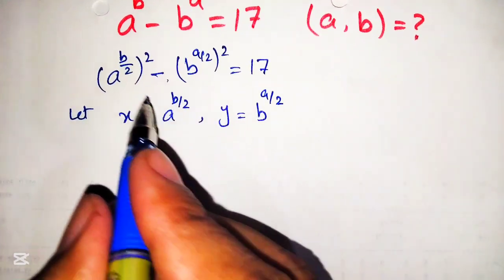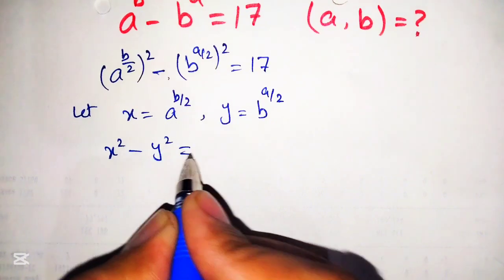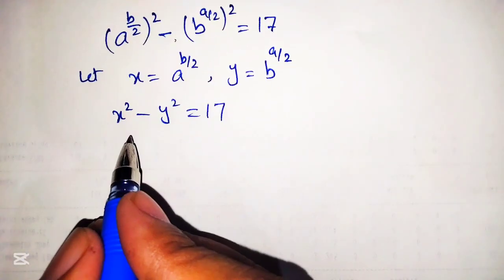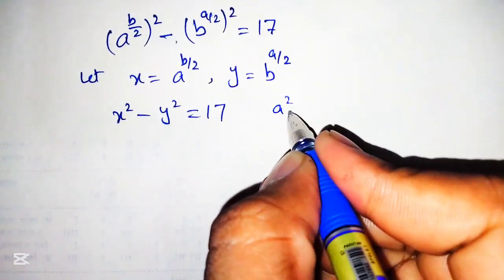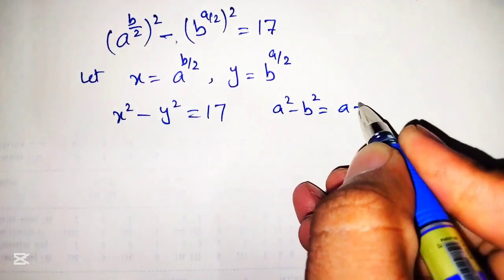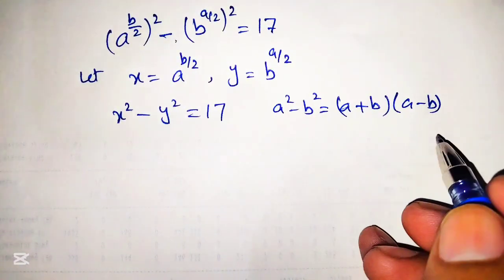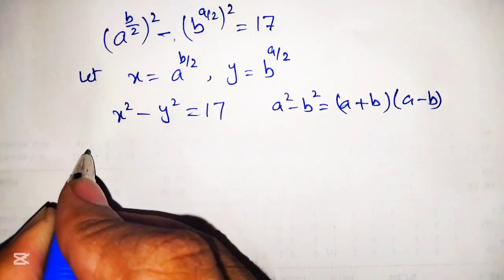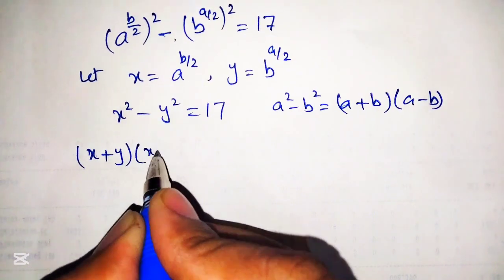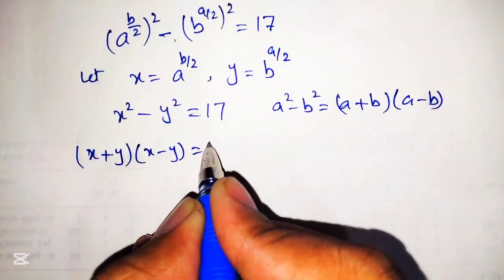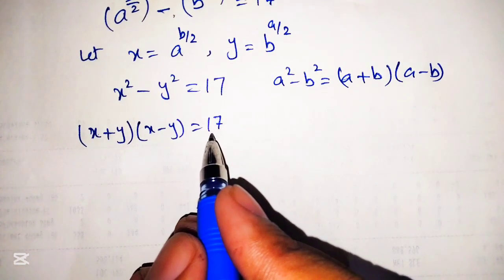Putting these values into the equation we get x squared minus y squared is equal to 17. This is a famous mathematical formula: a squared minus b squared equals a plus b into a minus b. So according to this formula we rewrite this as x plus y into x minus y is equal to 17. Now to solve this we will write all possible factors of 17.